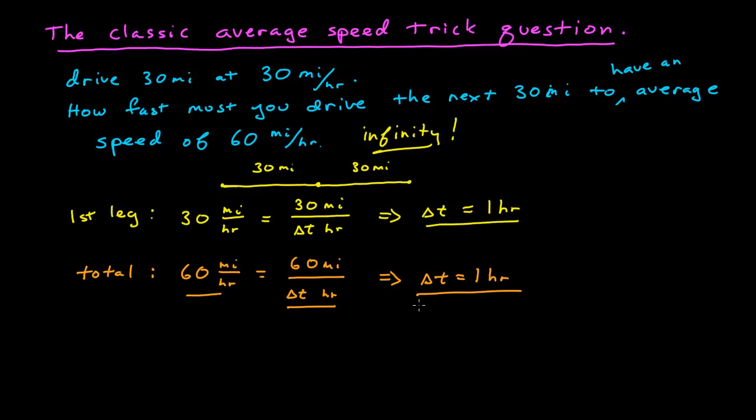To be able to average 60 miles per hour for the entire trip, we had to complete the entire trip in one hour. However, in this example, we completed the first leg in exactly one hour, which meant we had no time left to be able to complete the second leg at all. We would have to teleport to the end, essentially go infinitely fast, to be able to have an average speed of 60 miles per hour.